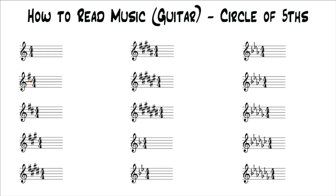For example, this one right here relates to the G major scale — so this would be in the key of G. The reason it has one sharp on the F line is because the G major scale has one sharp, which is F. The G major scale is G, A, B, C, D, E, F sharp, back to G. This one right here is the D major scale, representing the key of D because the D major scale has two sharps — F sharp and C sharp. The D major scale is D, E, F sharp, G, A, B, C sharp, back to D.